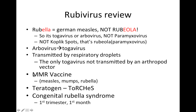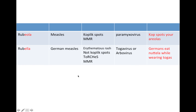We have the MMR vaccine — measles, mumps, and rubella — so we can use it for both measles and German measles. It's a teratogen; remember the TORCHES mnemonic. And remember congenital rubella syndrome occurs in the first trimester, especially the first month.